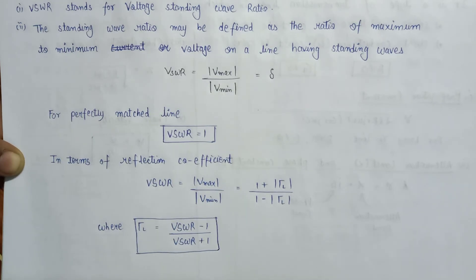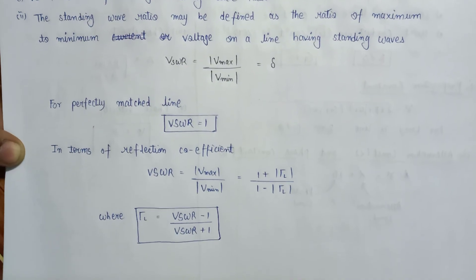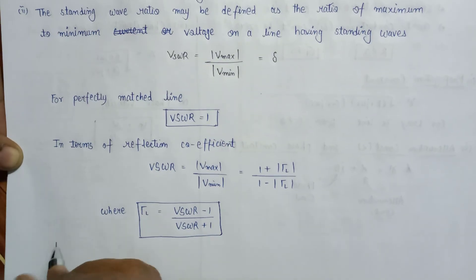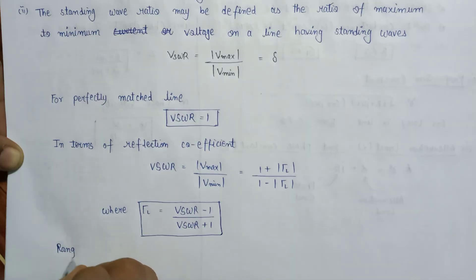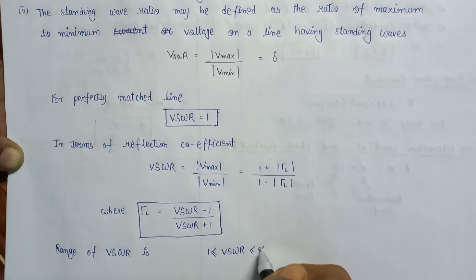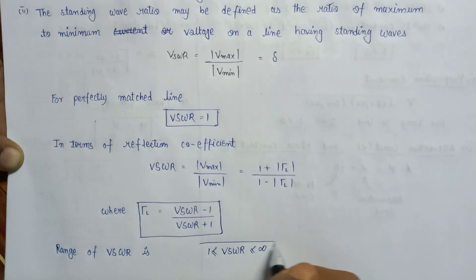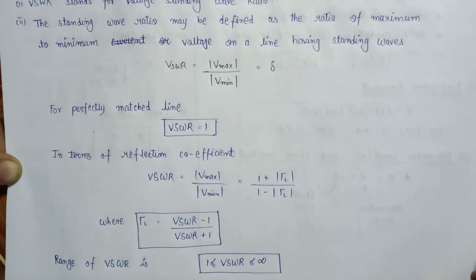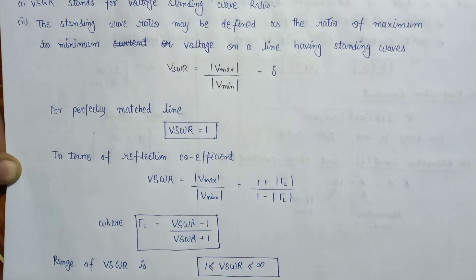Now if we talk about the range of VSWR, then the VSWR always lies between one to infinite. So the range of VSWR is: one is less than or equal to VSWR is less than or equal to infinite. So this is the range for the existence of VSWR. This is all about VSWR. Thank you.